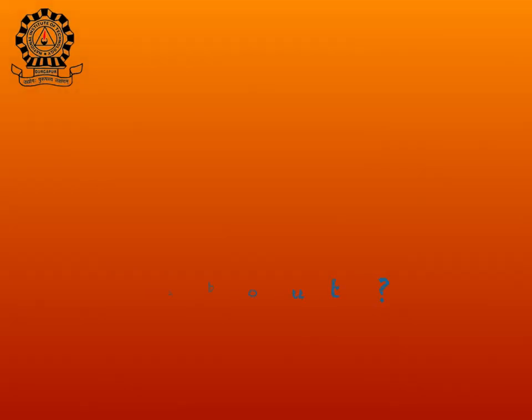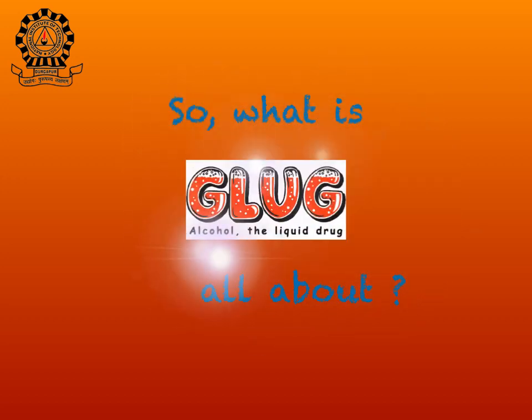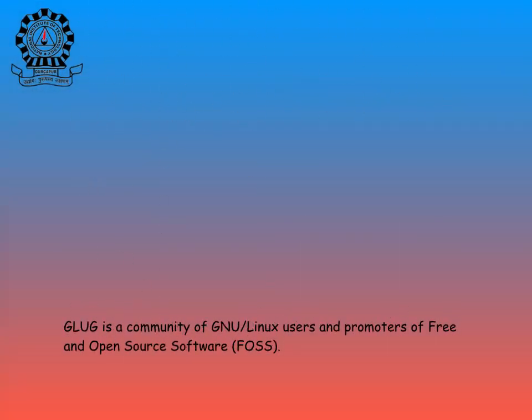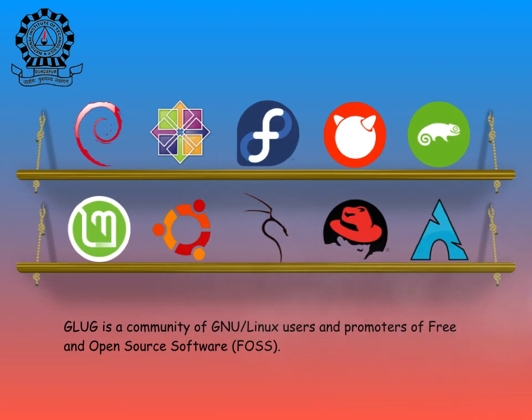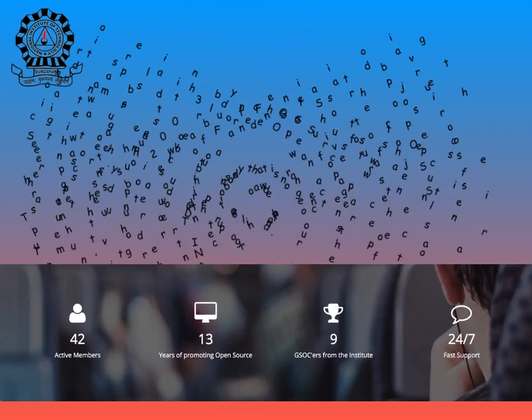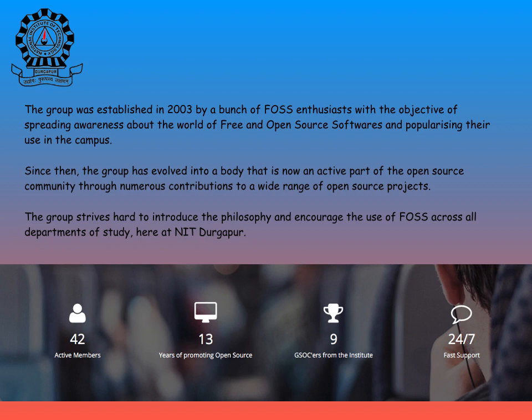So what is GLUG all about? GLUG is a community of GNU Linux users and we promote free and open source software. The group was established in 2003 by a bunch of FOSS enthusiasts with the objective of spreading awareness about the world of free and open source software and popularizing their use in the campus.